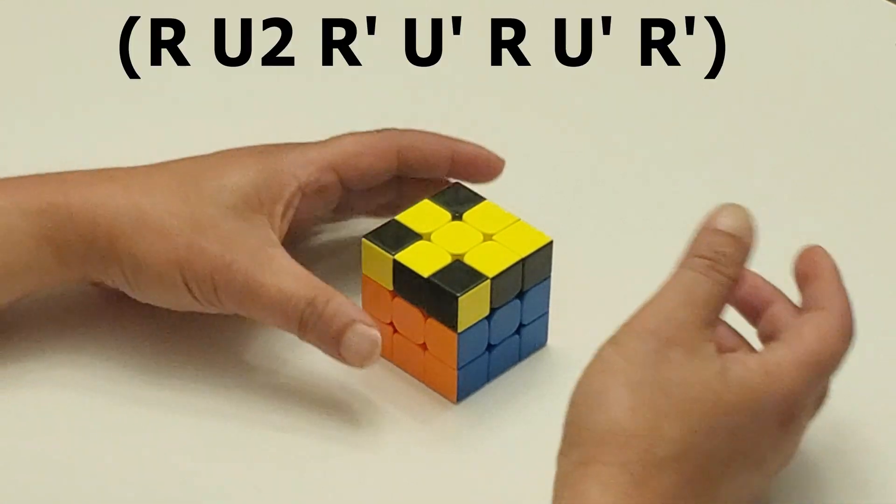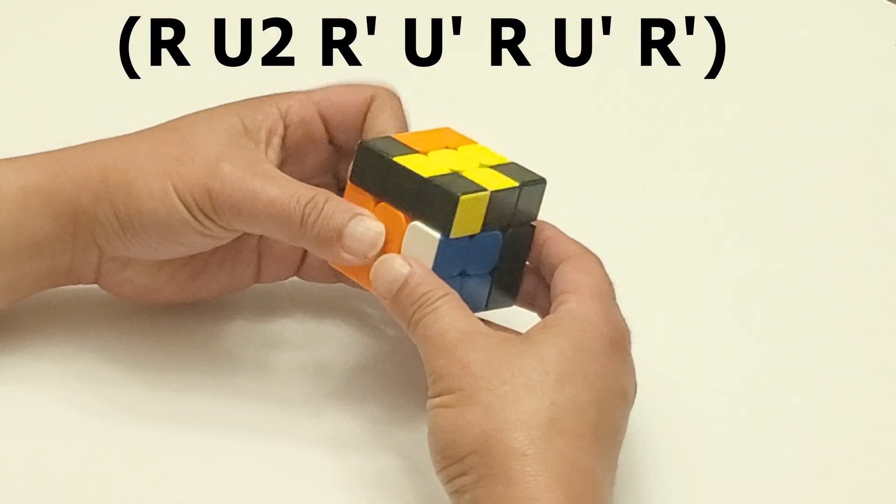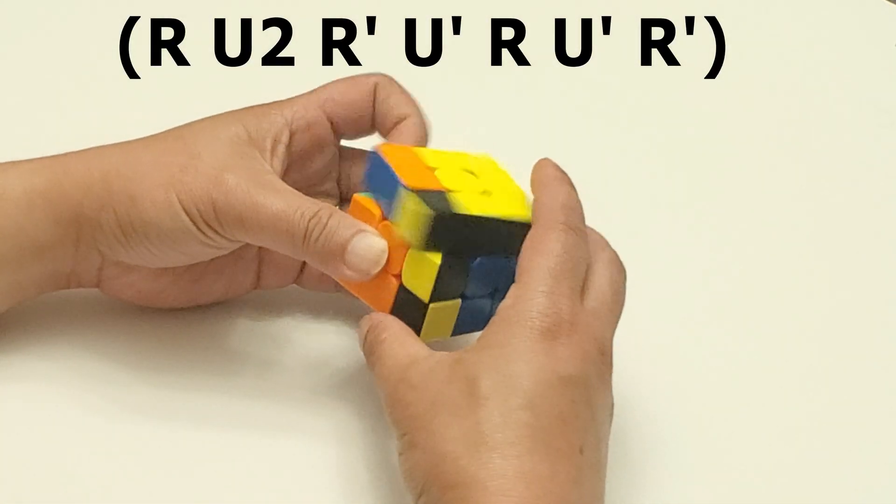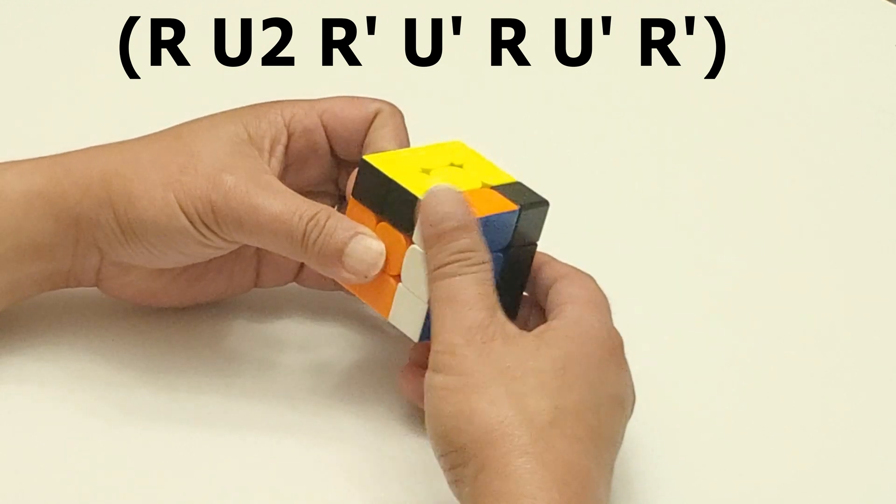It looks like this. R, U2, R', U', R, U', R'.